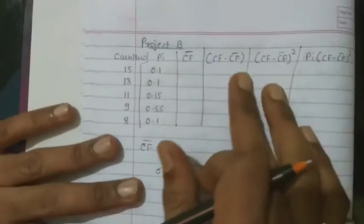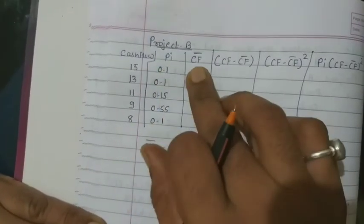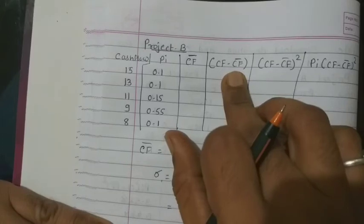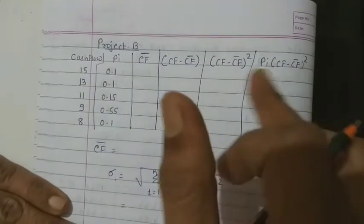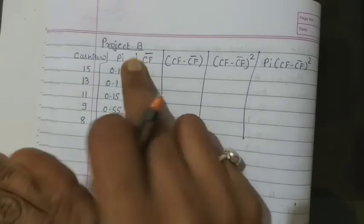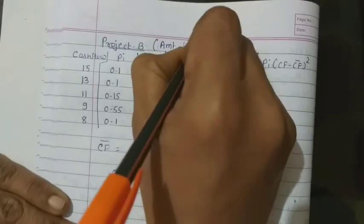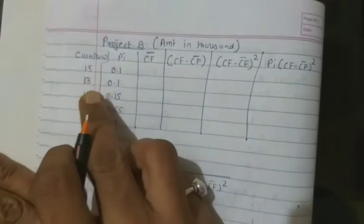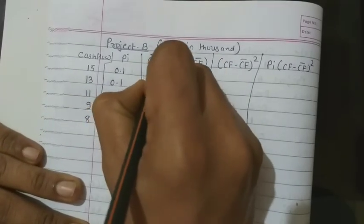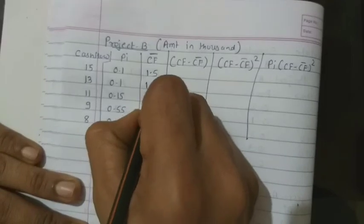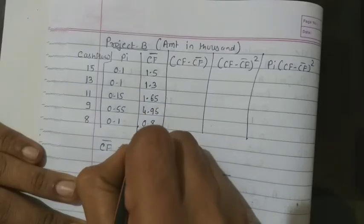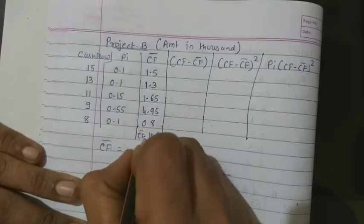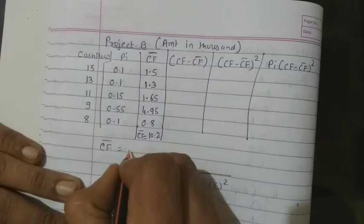Now for Project B: cash flow and probability are given. Find expected cash flow (CF-bar), CF minus CF-bar, (CF minus CF-bar) squared, and PI into (CF minus CF-bar) squared. Cash flows in thousands: 15, 13, 11, 9, 8. Multiplying with probabilities: 15×0.1=1.5; 13×0.1=1.3; 11×0.15=1.65; 9×0.55=4.95; 8×0.1=0.8. Expected CF-bar = 10.2, i.e., 10200.